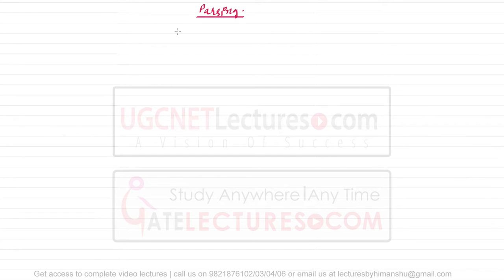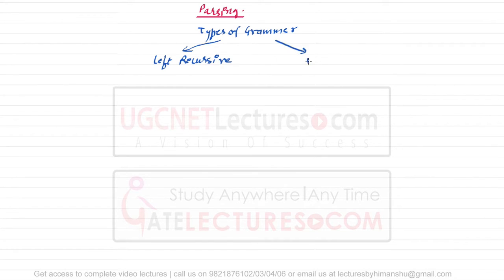Before we start discussing parsing, we need to know the types of grammar. There are two types of grammar: number one is left recursive grammar, and number two is right recursive grammar. You can also categorize grammars as ambiguous grammar and unambiguous grammar. Parsing means: given some string or a line of a program, can you derive how this program was generated from a given grammar?